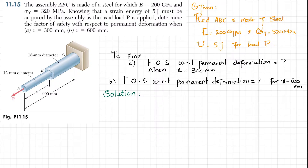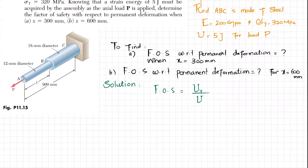Let's start the solution. As we discussed in our previous problem 11.14, the factor of safety is equal to the total strain energy at the point of yielding divided by the total strain energy applied. We have the applied value but we do not know the total strain energy till the point of yielding, so we will find that.